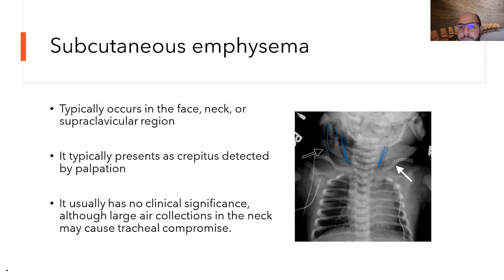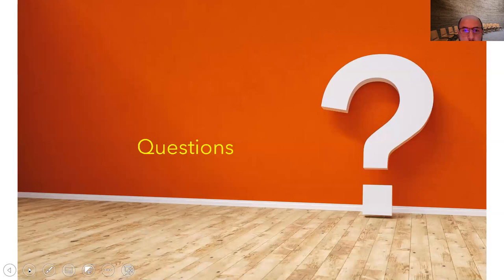In summary, we discussed five pulmonary air leaks: pneumothorax, pneumomediastinum, pneumopericardium, pulmonary interstitial emphysema, and subcutaneous emphysema. Tension pneumothorax and pneumopericardium are true emergencies requiring immediate action. Pulmonary interstitial emphysema is relatively common in level four NICUs managing very tiny babies. You need to know why PIE occurs, its underlying causes, how to diagnose it, and how to prevent it. Thank you.